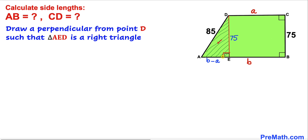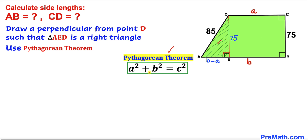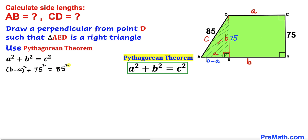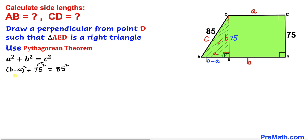Focusing on right triangle AED, we apply the Pythagorean theorem: a² + b² = c². In our case, (b − a)² + 75² = 85². Moving 75² to the other side: (b − a)² = 85² − 75² = 7225 − 5625.